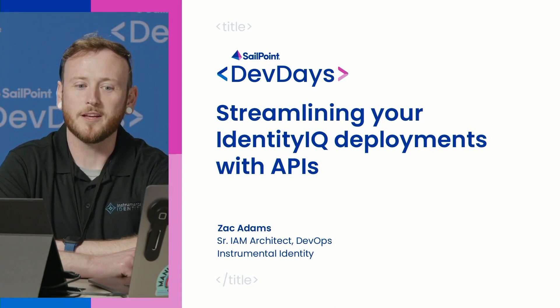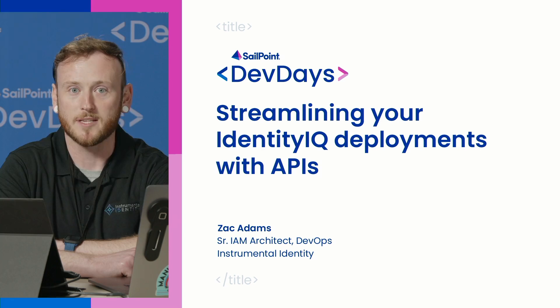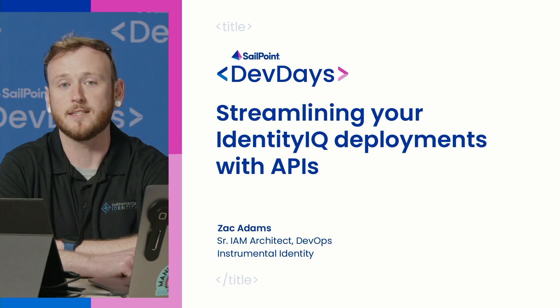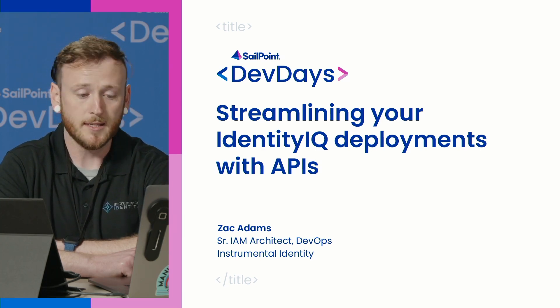Hello, welcome to Streamlining Your Identity IQ Deployments with APIs. My name is Zach Adams and I'm a senior IAM architect specializing in DevOps and SRE with Instrumental Identity. Today I'm going to be talking about how you can use APIs to automate your deployment process, leverage shell scripts to standardize your deployment process, ensuring a smooth deployment every single time, speed up your deployments, and set yourself up for further automation such as implementing CI/CD pipelines.